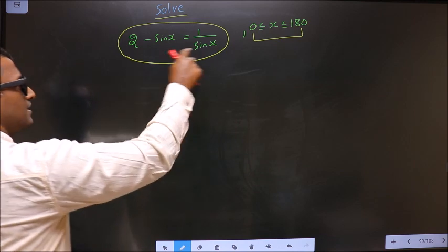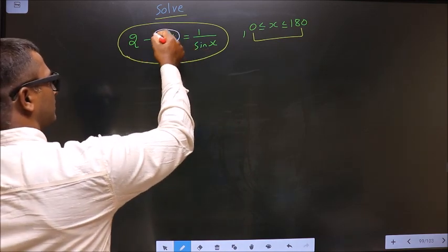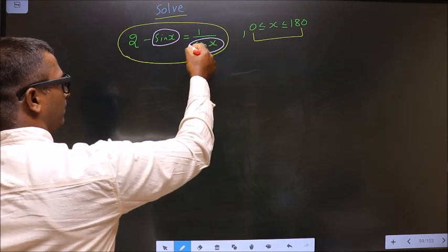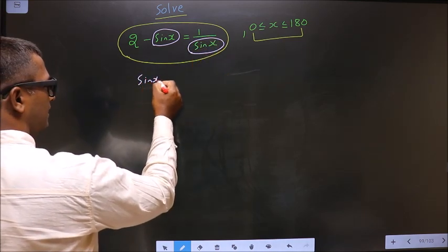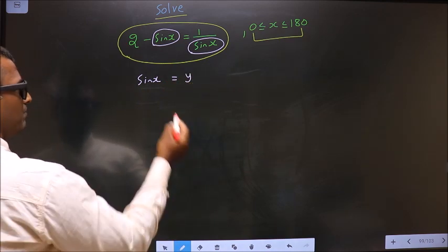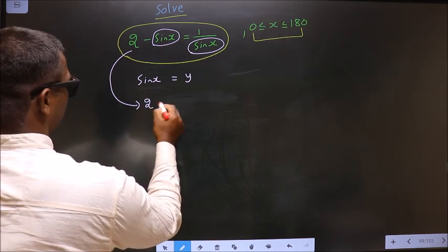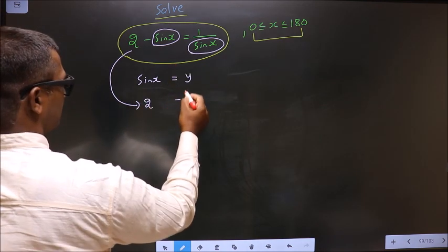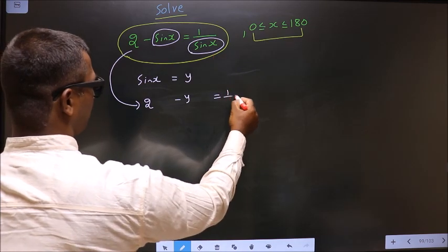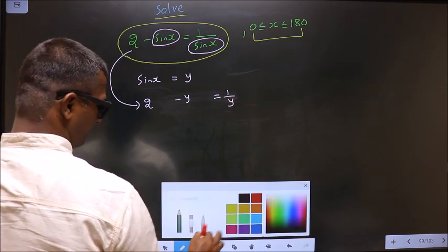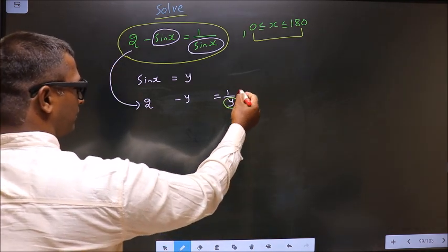Now in this equation you have sin x present in two places, so what you do is you take sin x to be some other letter, let's say y. Now this equation will change to 2 minus y equals 1 by y. Now you should remove the denominator. To remove the denominator, you multiply by y to each term.